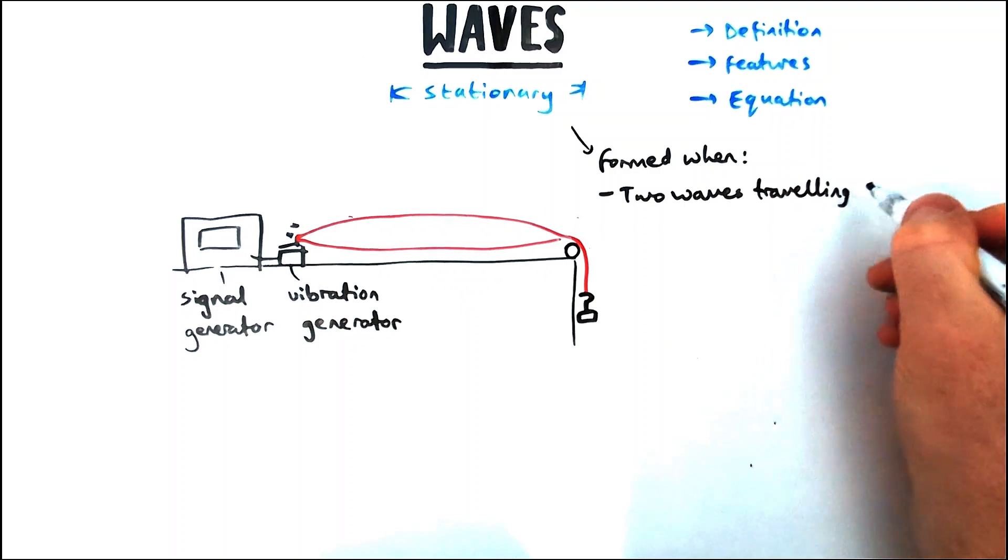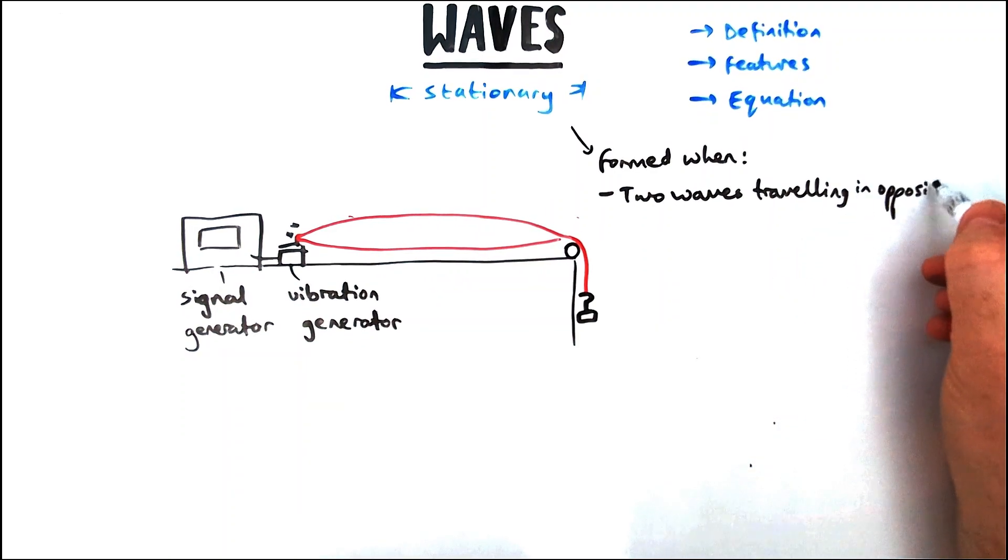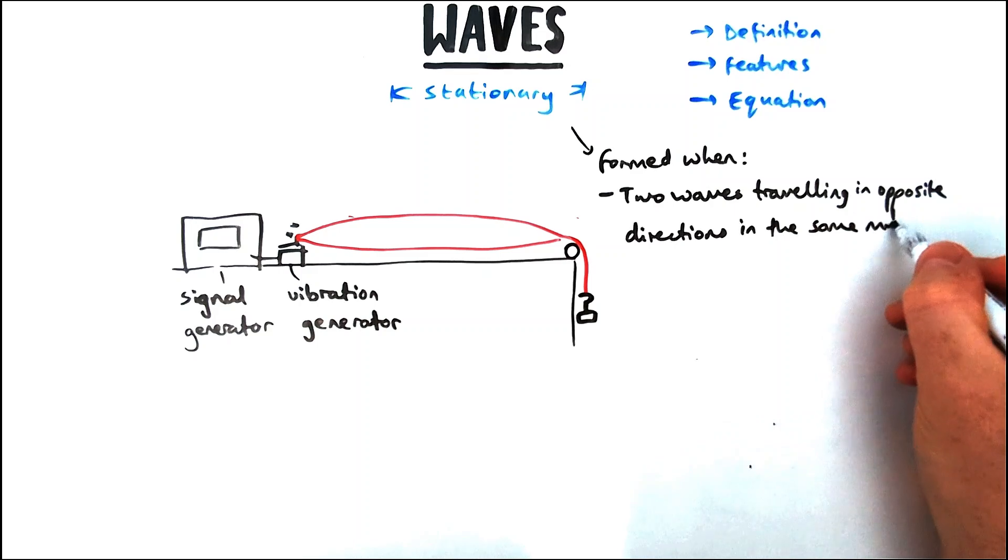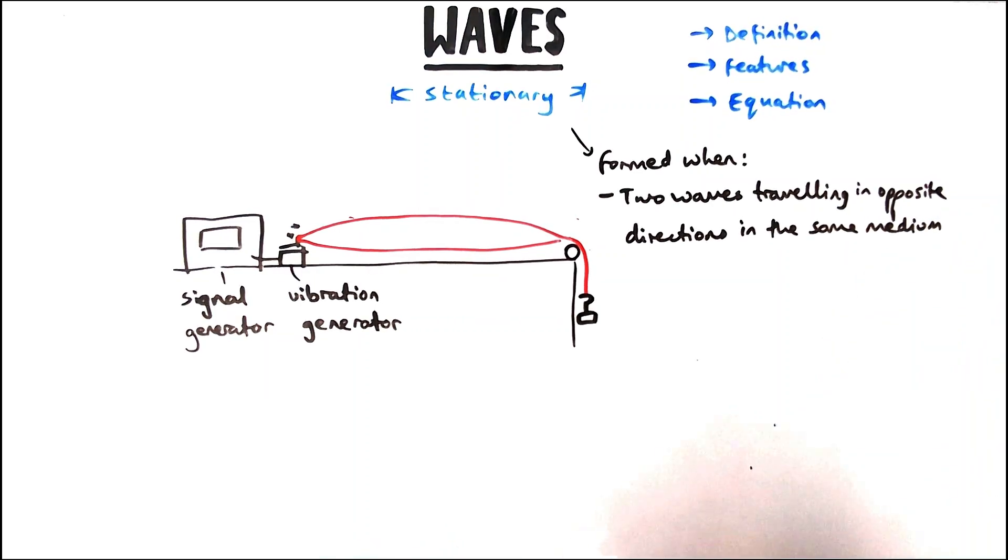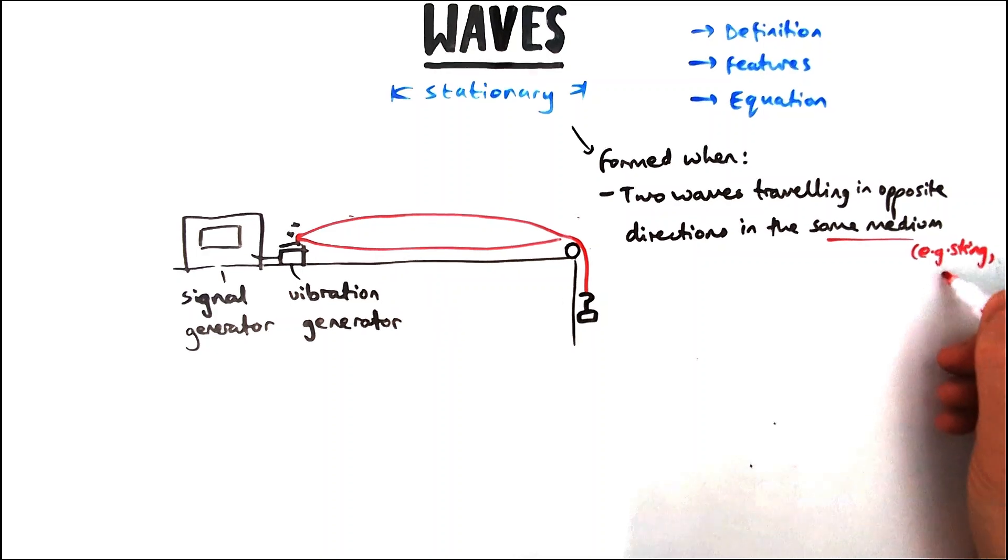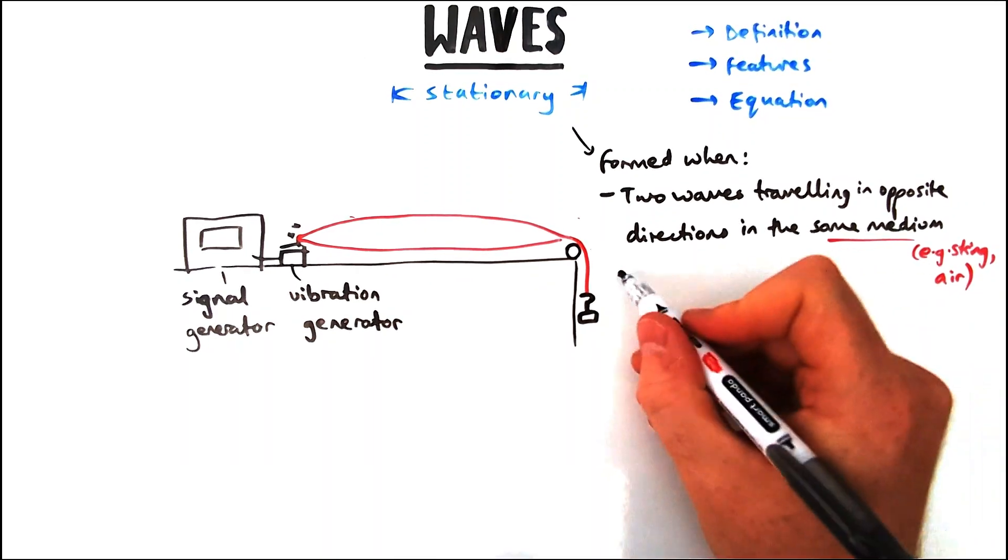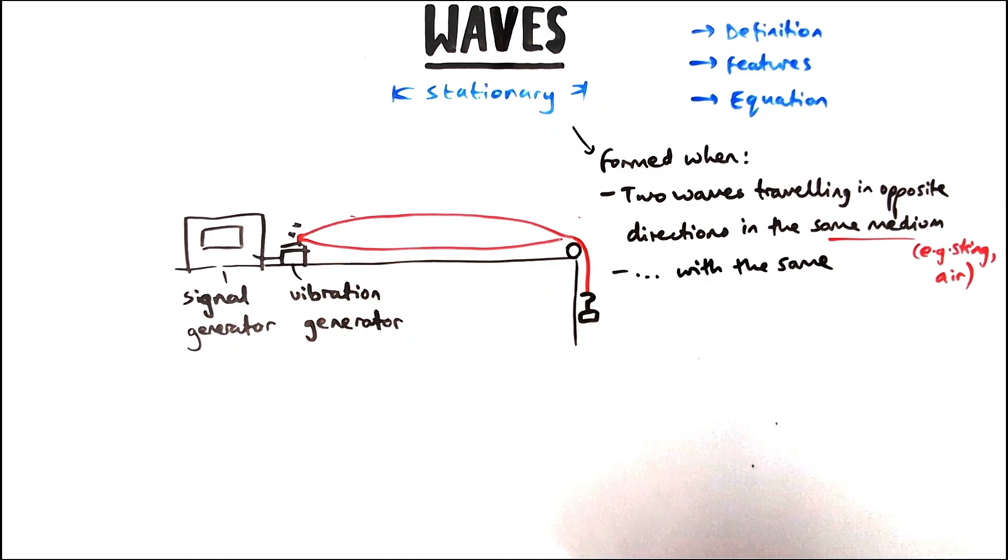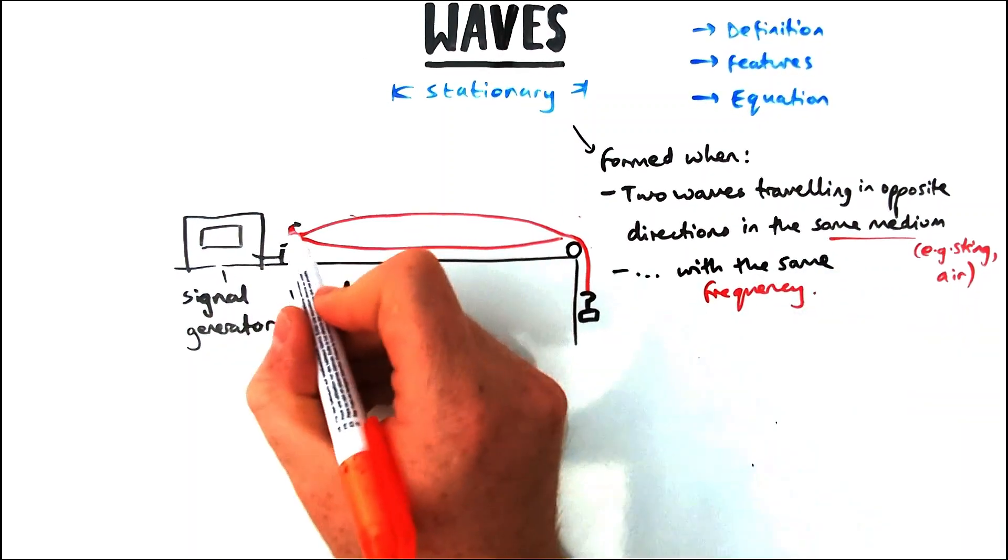How are stationary waves formed? Well, they're formed when you've got two waves that are traveling in opposite directions. On the string, that means it's reflecting back. They're traveling in opposite directions in the same medium, so in this case we're talking about on the piece of string. It could be in air for sound waves, it could be anything. And they're in the same medium and they have the same frequency.